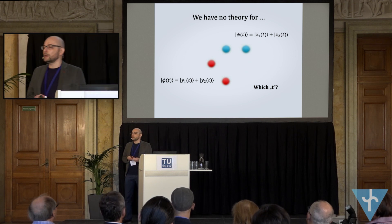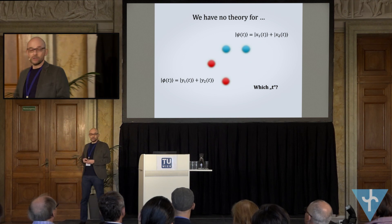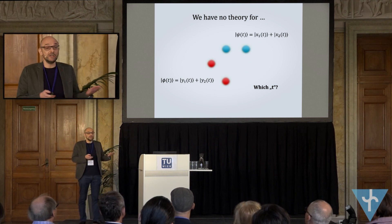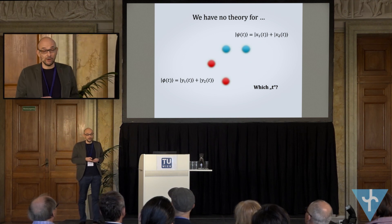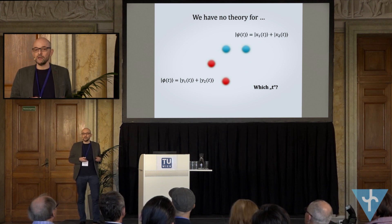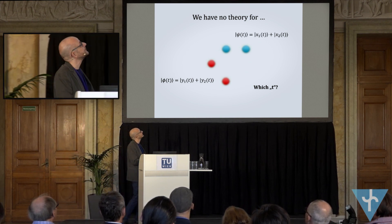The red particle has no definite background, and we cannot easily define time for it simply because the blue particle, which interacts with the red one, is not in a well-localized position. You can interchange the roles of the red and the blue particle. So: which T? Honestly, we don't have a theory for that if you want to solve it precisely enough.